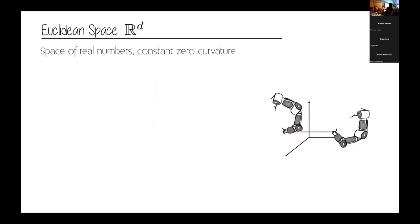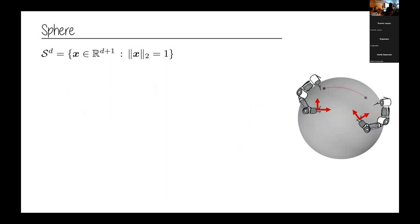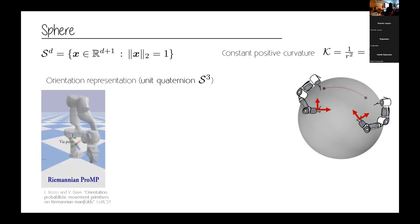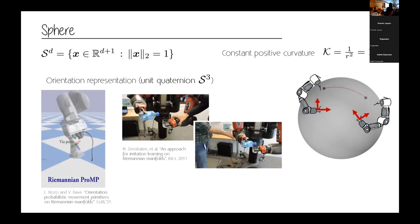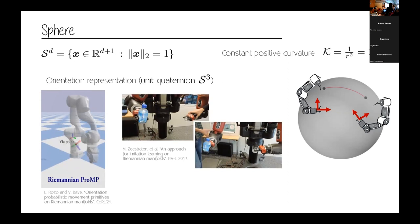The first manifold is Euclidean space, which is still a Riemannian manifold — it's familiar to all of us. It is used to represent orientations, forces, and torques. Then we have the sphere, which is the set of vectors in Euclidean space whose norm equals one. This manifold is used to represent orientations, and there are recent works in learning from demonstration that use this formulation to properly learn patterns of orientation when learning motion skills.